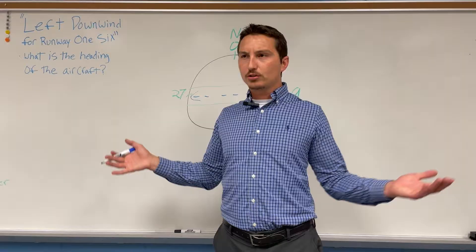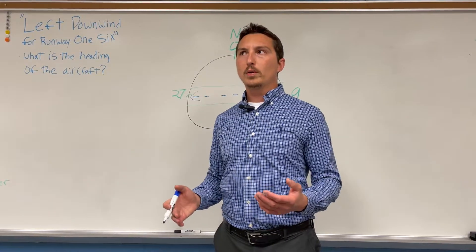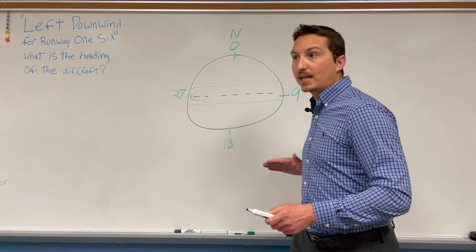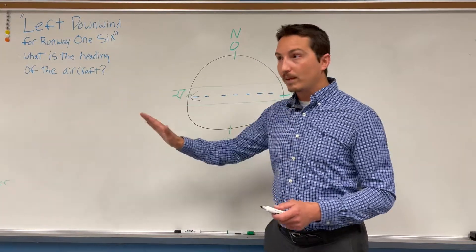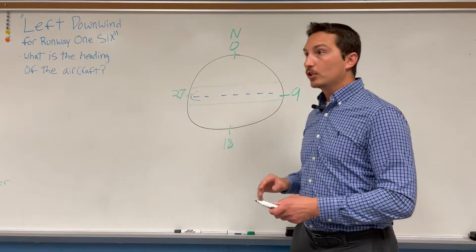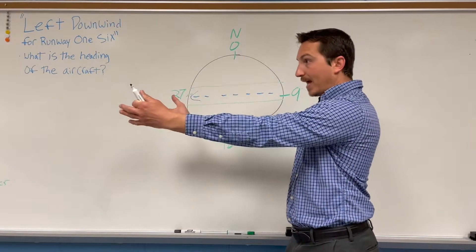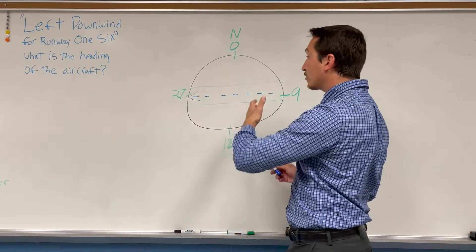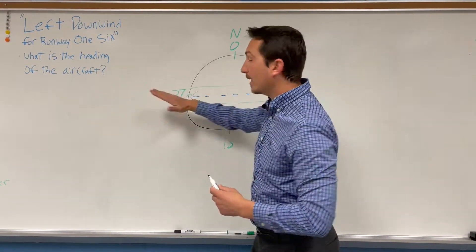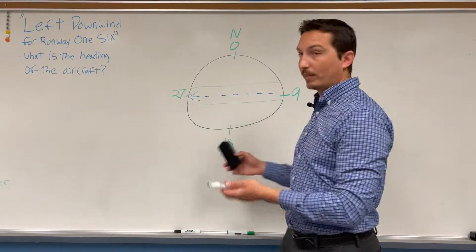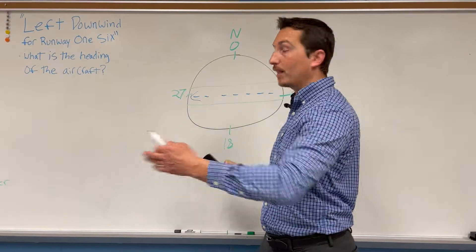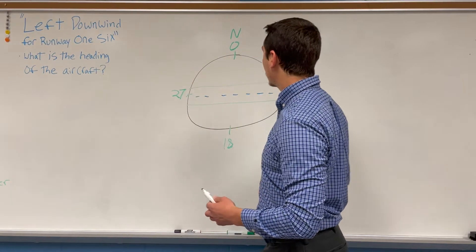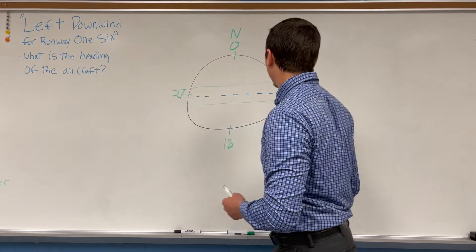How does the FAA determine which way the plane's going to take off and land? It's based on the wind. Planes like to take off and land into the wind because it helps with lift — they want a headwind when taking off and landing. So if the wind is coming out of the west, we're going to take off heading into the west. Same if the wind is coming from the east.